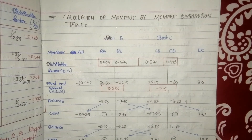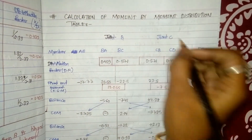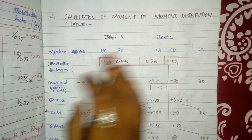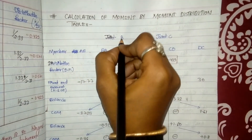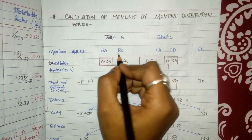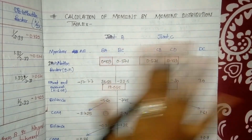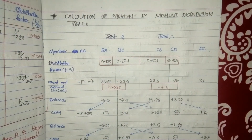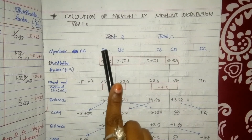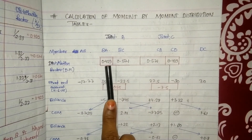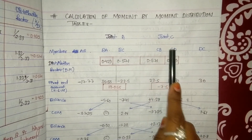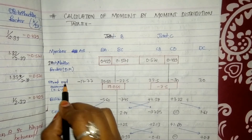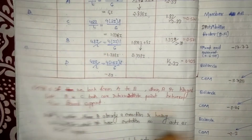Step 3: Calculation of moment by the moment distribution table. We write joints B and C, then list members. Under joint B: BA and BC; under joint C: CB and CD; remaining member: AB and DC. Distribution factors — BA: 0.429, BC: 0.571, CB: 0.571, CD: 0.429.